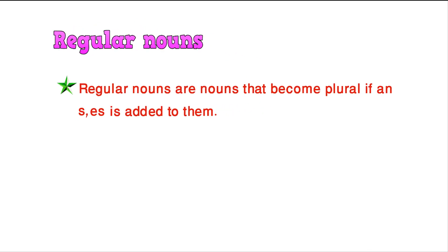Regular nouns are nouns that become plural if an S or ES is added to them. When we talk more than one thing, we add the S or ES.